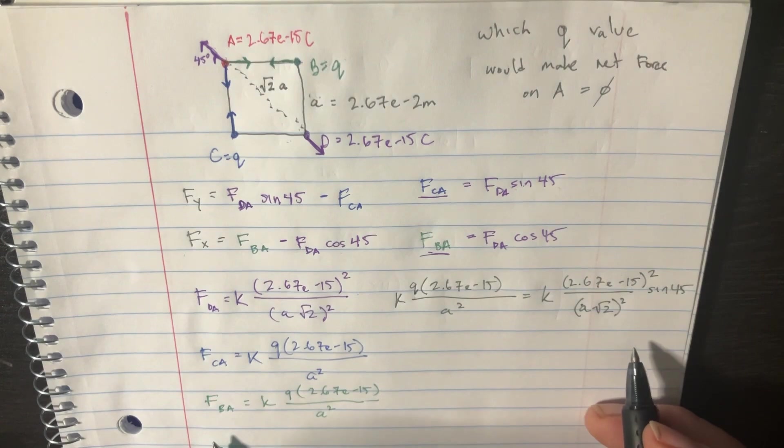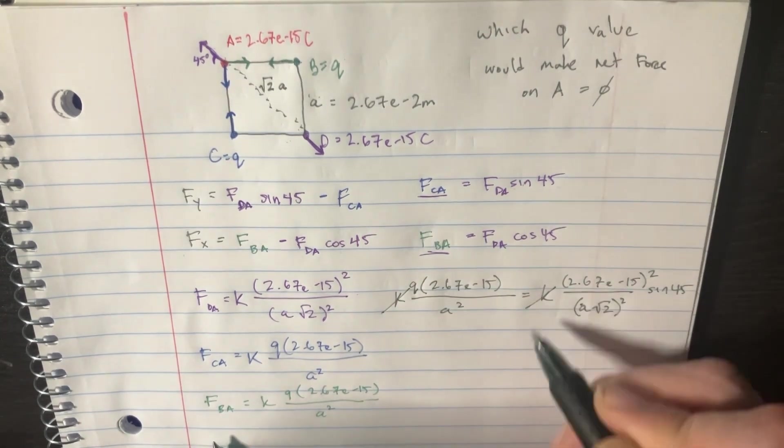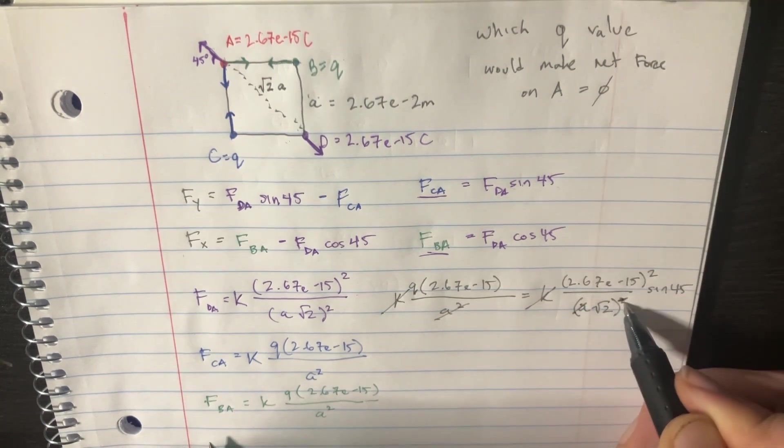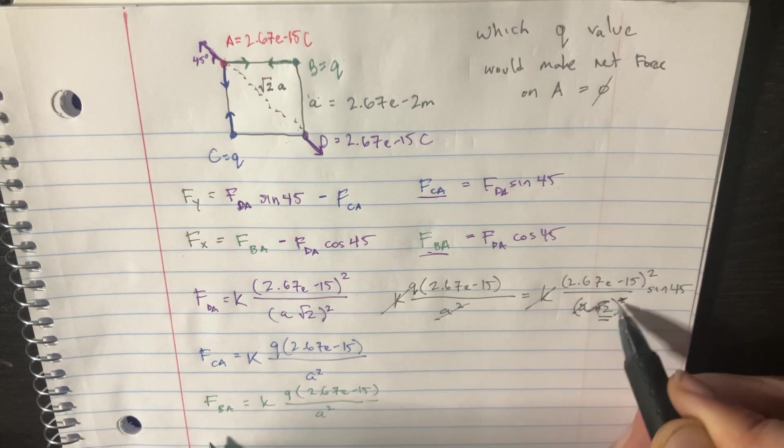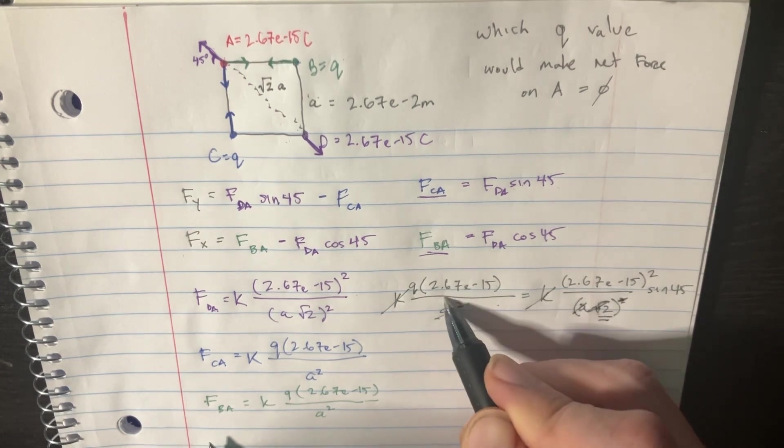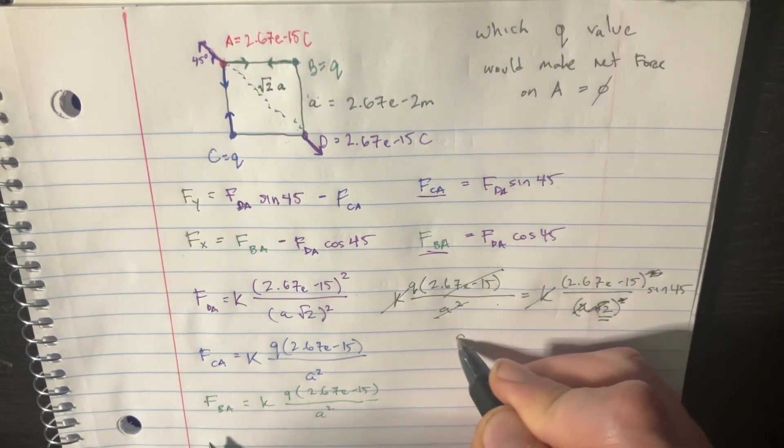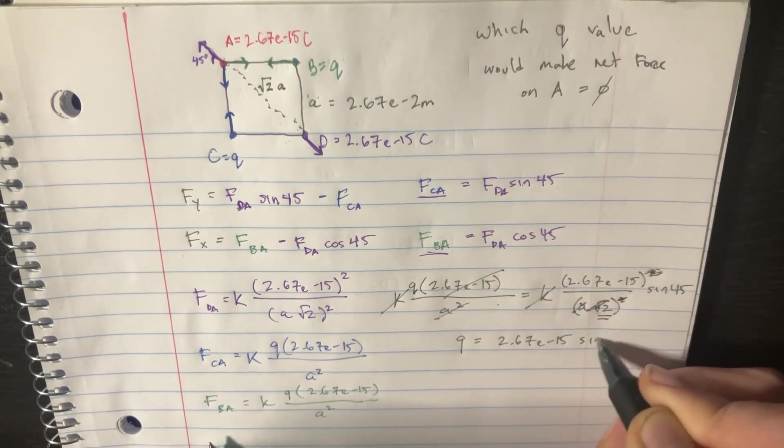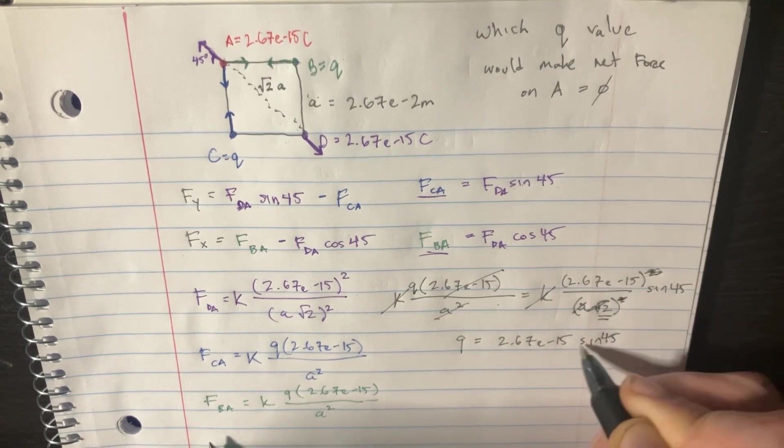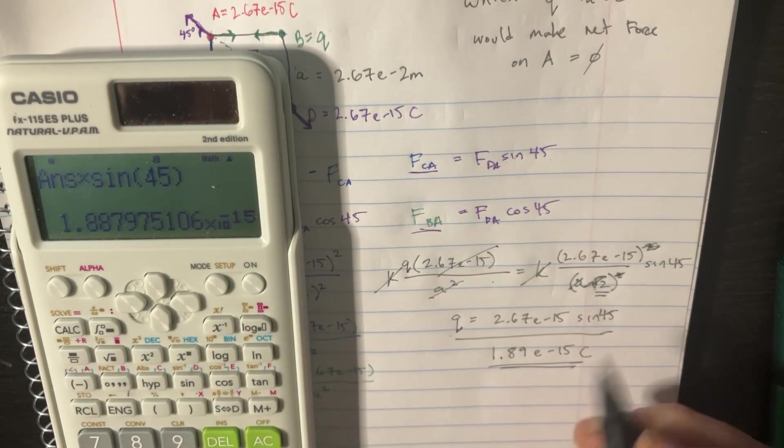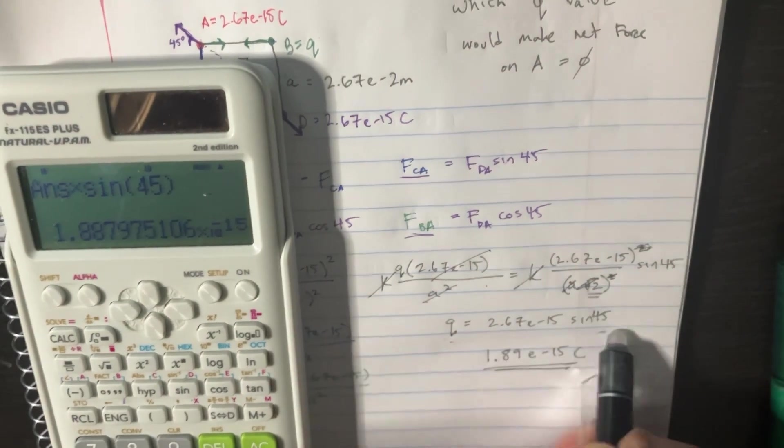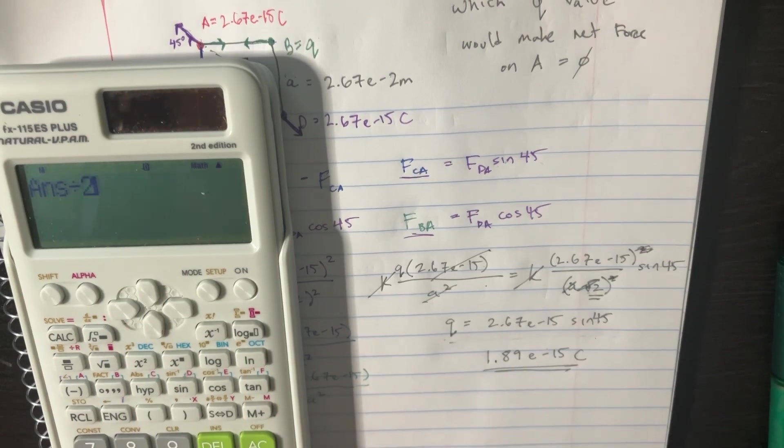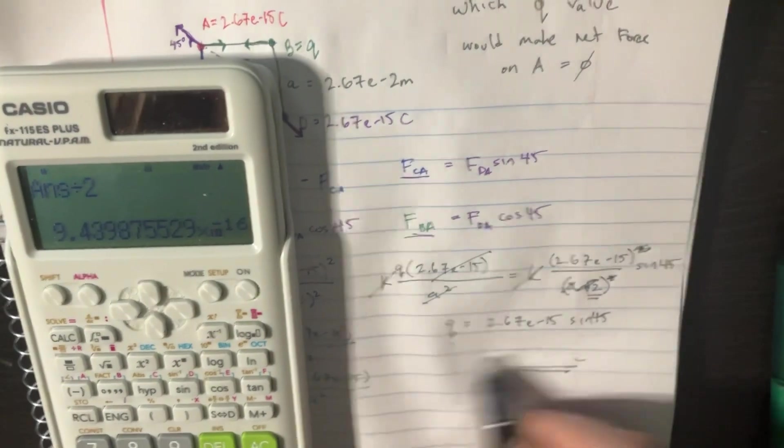And, so let's delete that, delete that, delete the A squared, delete the A squared, we're going to square this 2, so we've got a 2 on the bottom, and then we'll delete one of these. And so what we get is that Q equals 2.67 E to the negative 15 sine of 45. Let's not forget to divide this by 2. So we're going to divide this by 2. Divide that by 2. And then now, we've gotten the answer correctly.